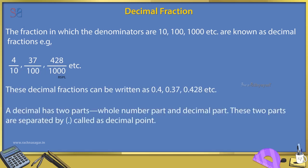A decimal has two parts: whole number part and decimal part. These two parts are separated by a dot called the decimal point.